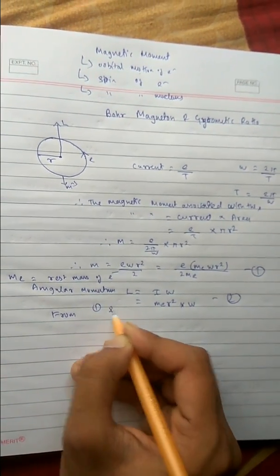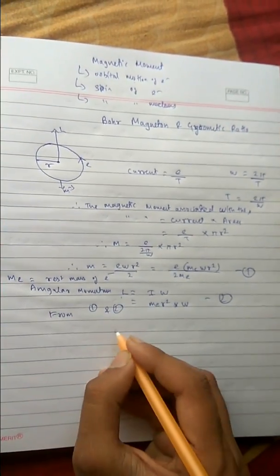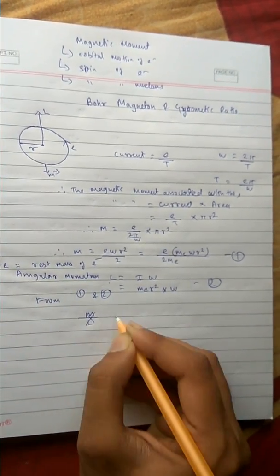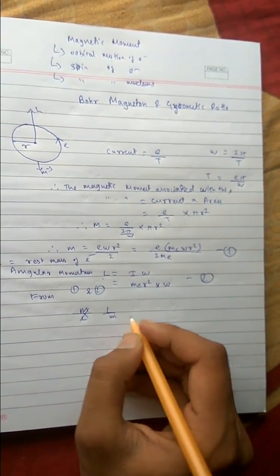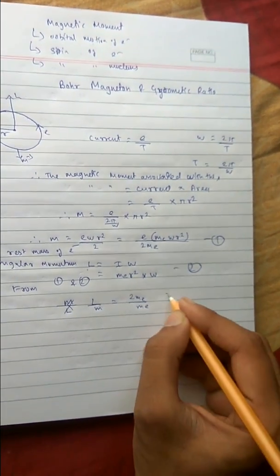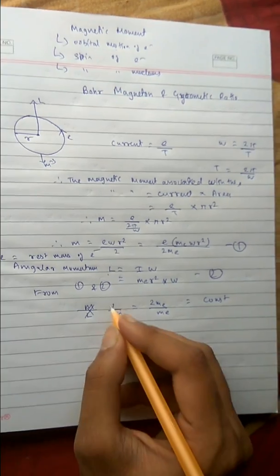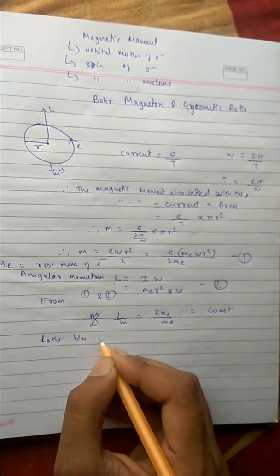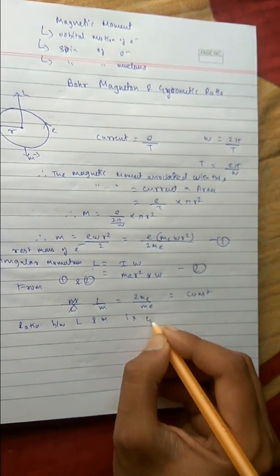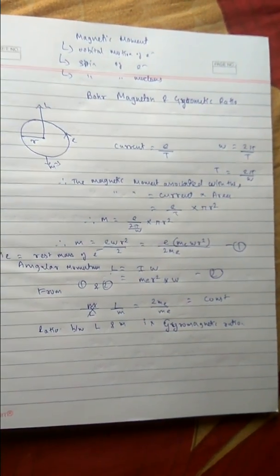From these two expressions, dividing the angular momentum L by the magnetic moment m gives: L/m equals 2·m_e divided by e. This ratio between angular momentum and magnetic moment is constant, and this constant ratio is called the gyromagnetic ratio.